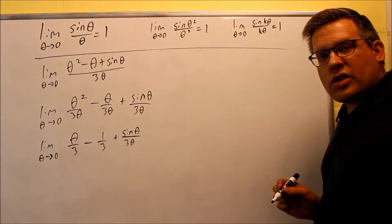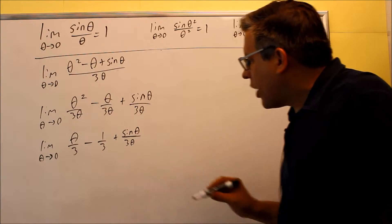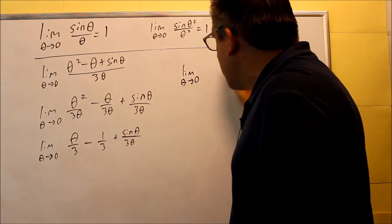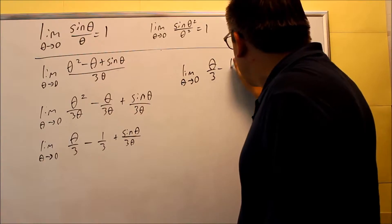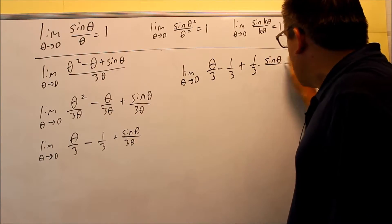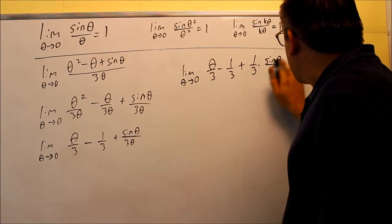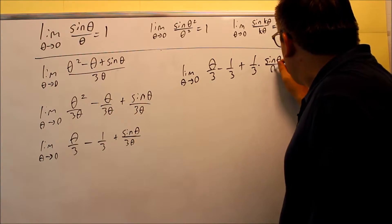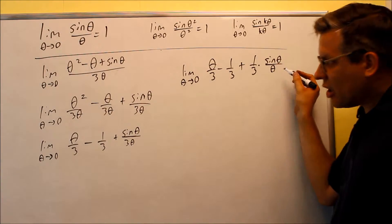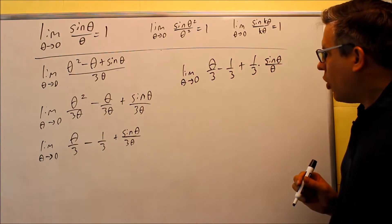This one over here, what I want to do is I want to separate this and write it differently. So I'm going to do limit theta goes to zero, theta over three minus one third plus one third times sine theta over theta. Why did I do that? Because you want to get sine theta over theta by itself because then we know for sure the limit of that is going to be one.